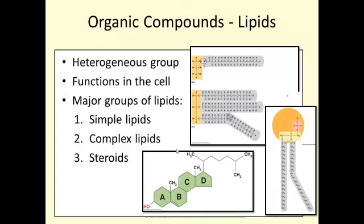All steroids have four rings hooked together — three six-carbon rings and one five-carbon ring — with various groups attached. This particular example is cholesterol. Cholesterol is vitally important for the health and maintenance of your cell membranes, but it's not good coating your arteries. Steroids in multicellular organisms also show up as hormones, but for this class we're mainly talking about their functions within the cell membrane.